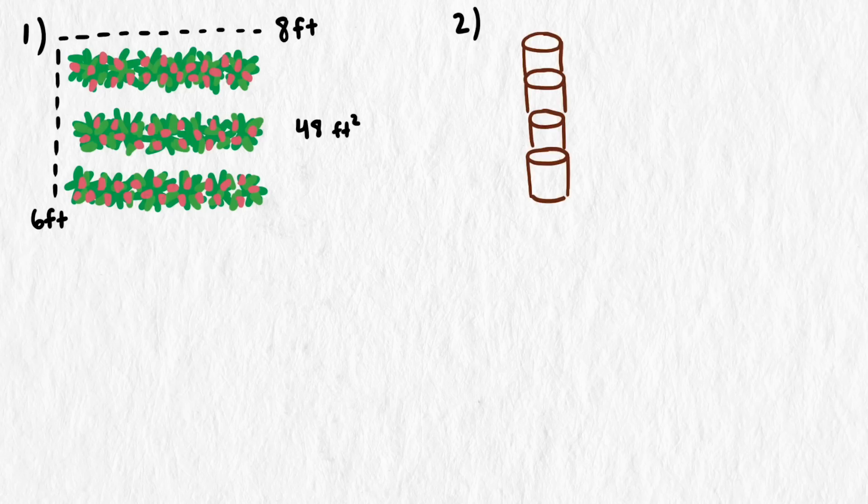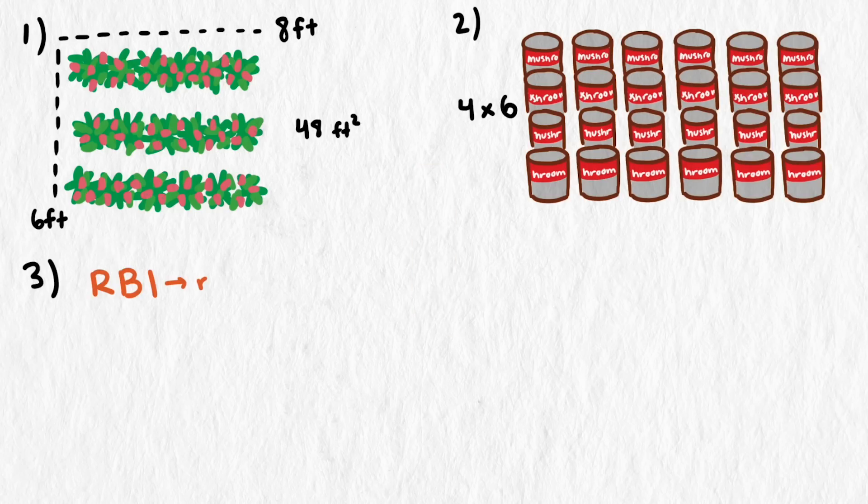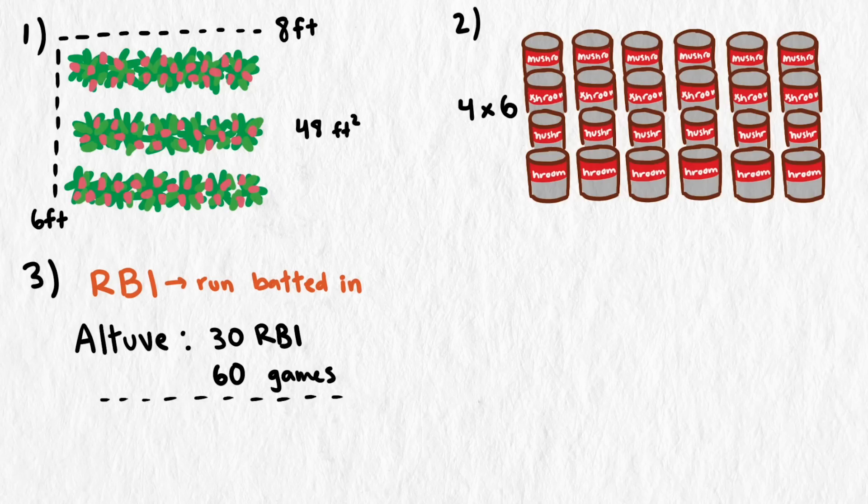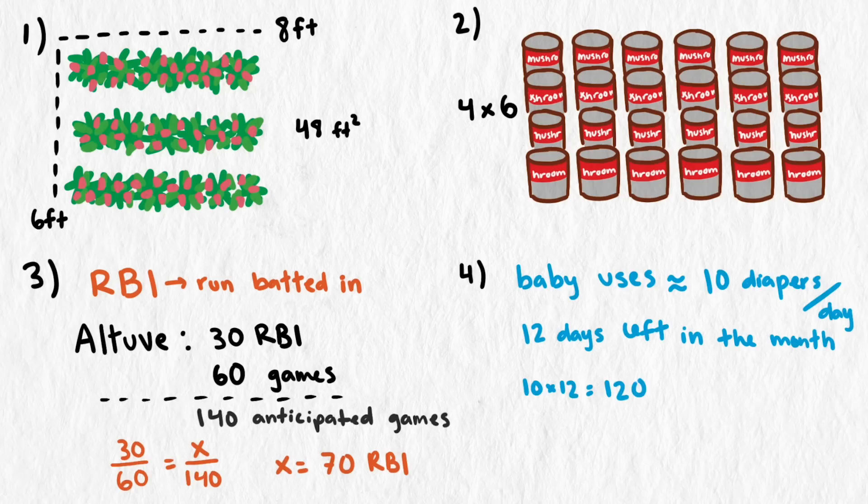Here are four recent examples when actual people used multiplication in their life: calculating the area of a raspberry patch, quickly checking to see if I had 24 cans of soup at the store—when you have eight kids you buy in bulk—estimating how many RBIs a favorite major league baseball player would have by the end of the season, and checking to see if the number of diapers on hand would last until the end of the month.